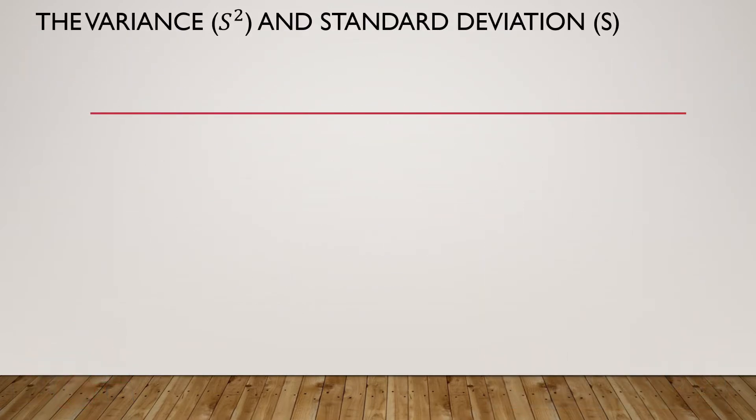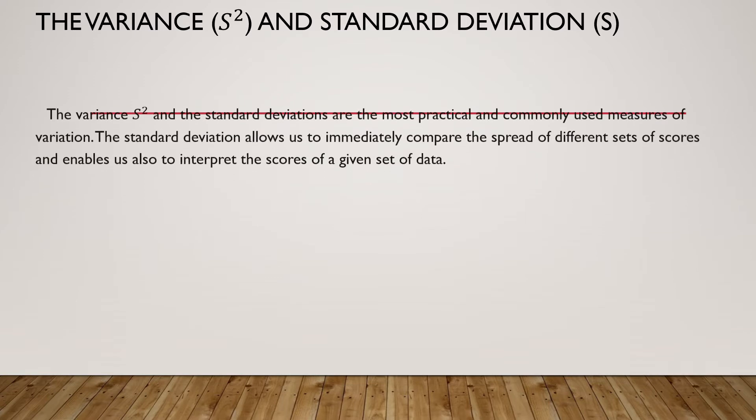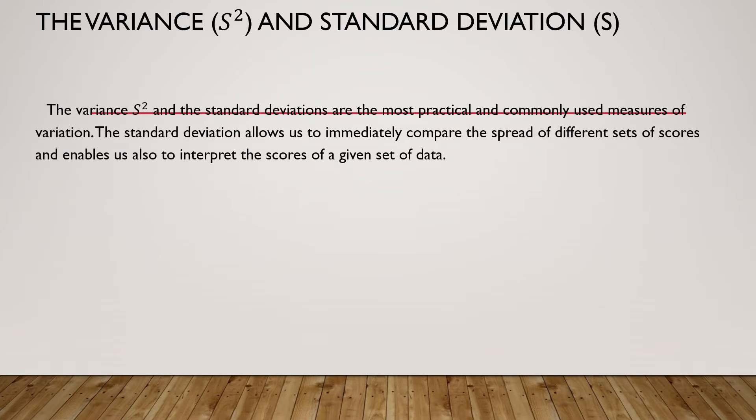The variance and the standard deviation. The variance, or S squared, and the standard deviations are the most practical and commonly used measures of variation. The standard deviation allows us to immediately compare the spread of different sets of scores and enables us also to interpret the scores of a given set of data.